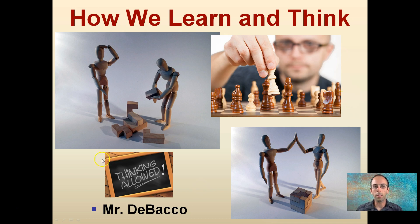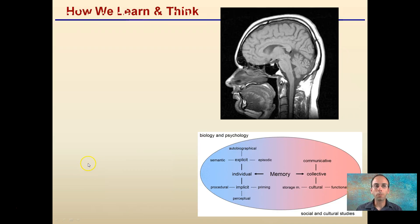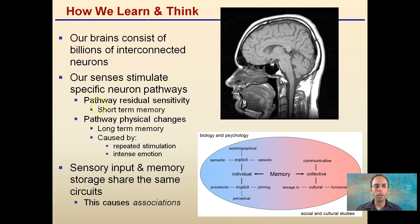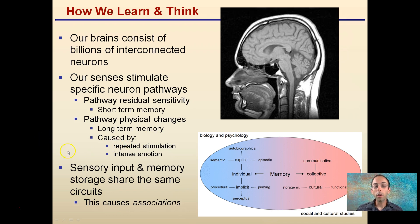Thinking is allowed in this section here in particular. Looking at how we learn and think — our brain is where most of this action occurs, and it consists of billions of interconnected neurons. Our senses stimulate specific neuron pathways. We have short-term memory, which is residual sensitivity pathways, and long-term memory, which is physical changes that may occur. Long-term memory can be caused by repeated stimulation and intense emotion. Sensory input and memory storage share the same circuits, and this causes associations to occur.